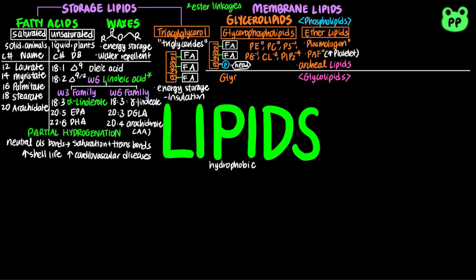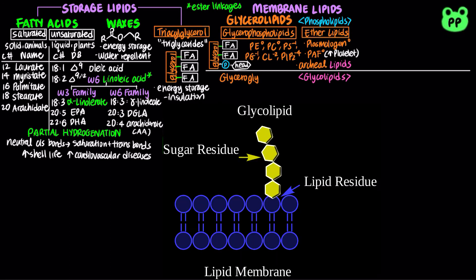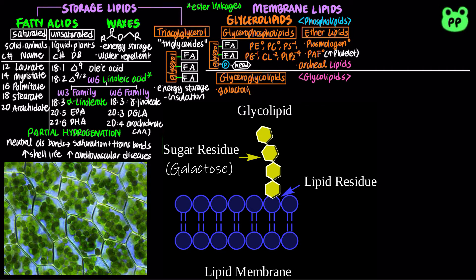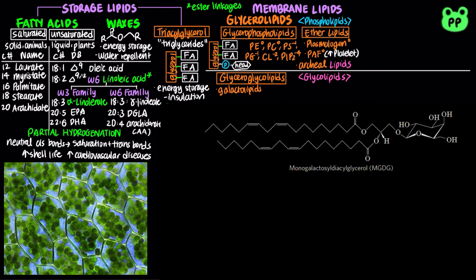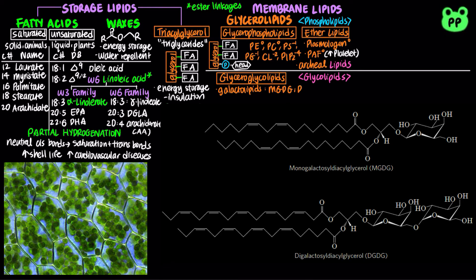Glycerolipids found in plant membranes are often associated with galactose residues rather than phosphate groups, since phosphate is often a limiting nutrient in soil. These glycerolipids are known as glyceroglycolipids, or more specifically galactolipids. Galactolipids are found in thylakoid membranes and make up 70–80% of total membrane lipids in vascular plants. Examples include monogalactosyldiacylglycerol (MGDG) and digalactosyldiacylglycerol (DGDG).